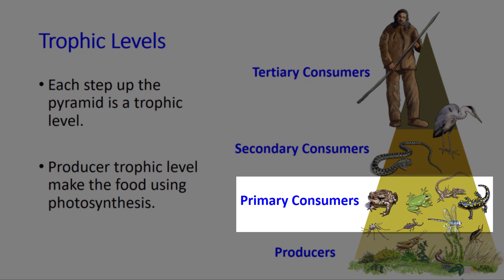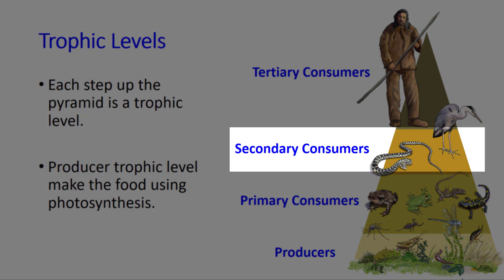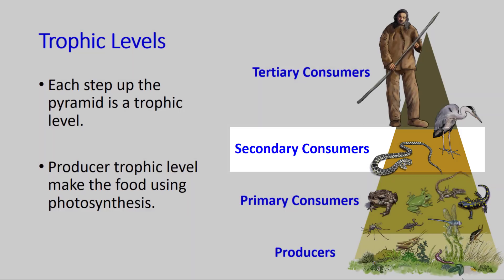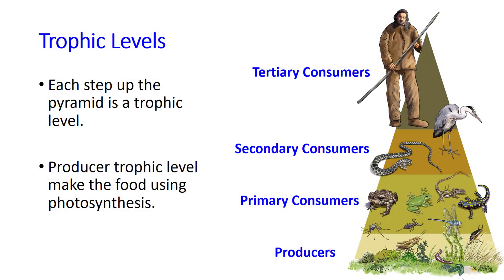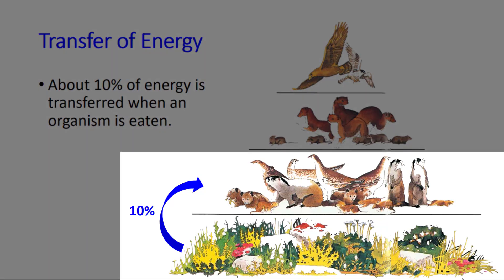Primary consumers eat the producers. Secondary consumers eat the primary consumers, and so on. Every time something is eaten, about 10% of the energy that was in the food is actually transferred.